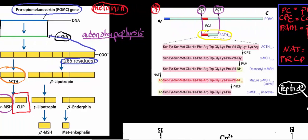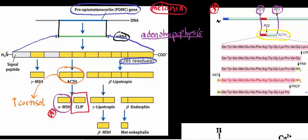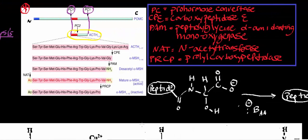Going back, one precursor to alpha-MSH is adrenocorticotropic hormone, but it's actually multiple steps to get to alpha-MSH. We now have the adrenocorticotropic hormone fragment. The next enzyme is CPE, or carboxypeptidase E, which clips between a glycine and a lysine, removing a series of basic residues that are part of ACTH. The result is a 14-residue inactive version of alpha-MSH — we'll have to do a few more things to make it active.